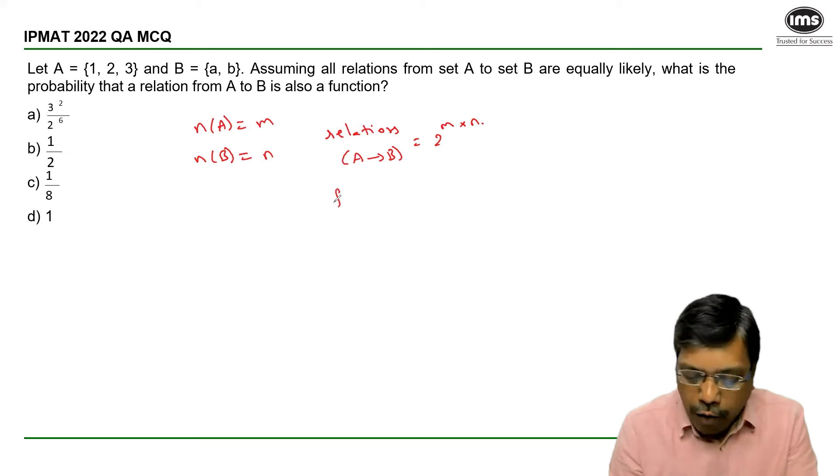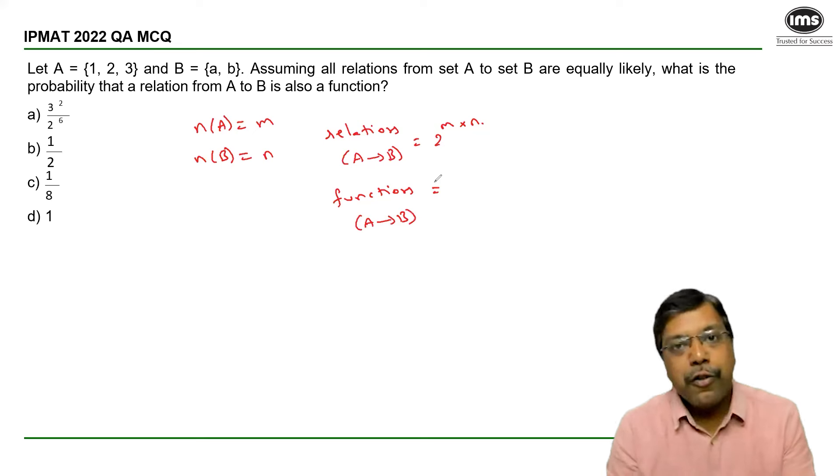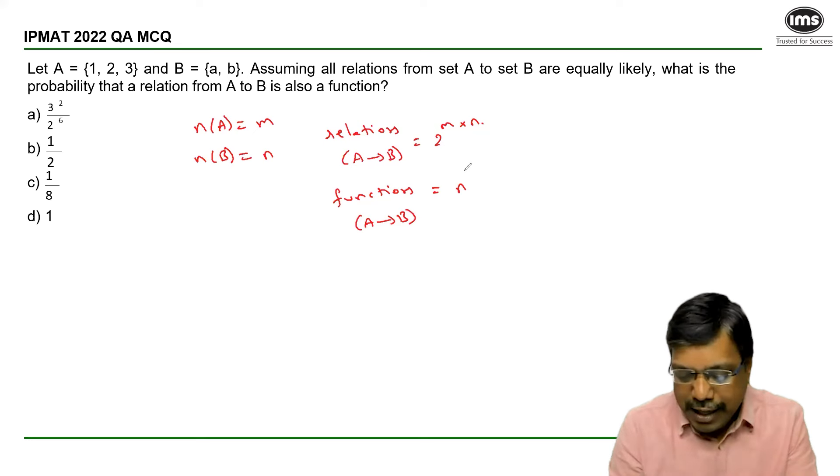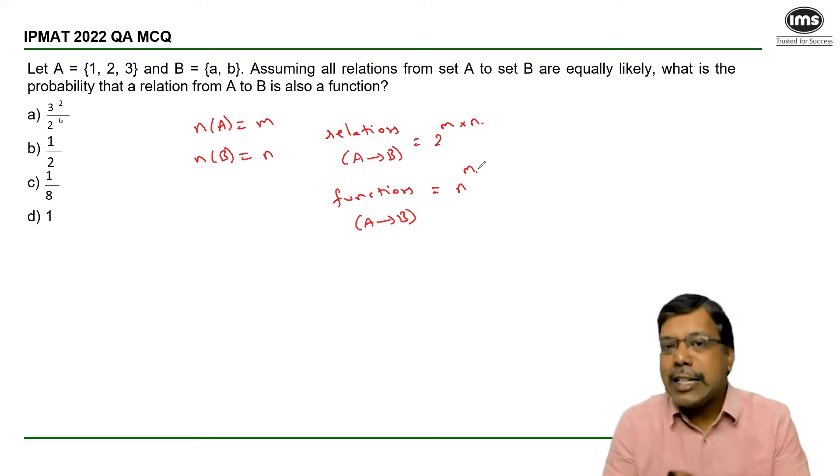And of these relations, how many will turn out to be functions from A to B is n power m. So the knowledge of these two points is sufficient for us to answer this question.